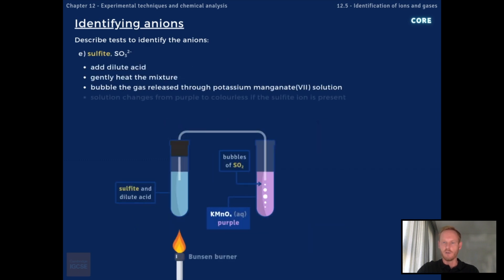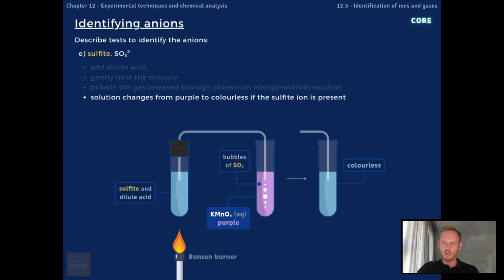To test for the presence of sulfite ions, SO3²⁻, add a dilute acid to the sample, gently heat the mixture and bubble the gas produced through aqueous potassium manganate 7. Sulfite ions react with dilute acids to produce sulfur dioxide gas, which turns aqueous potassium manganate 7 colourless.